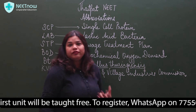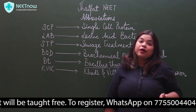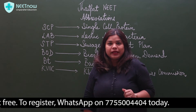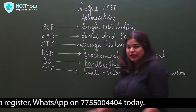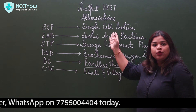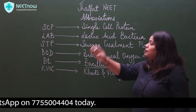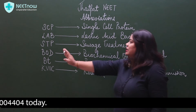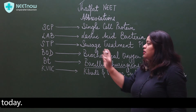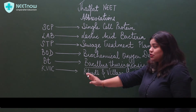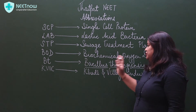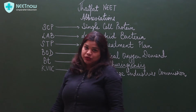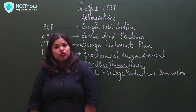So, today we have seen some abbreviations. I hope they will be very helpful. We have seen them in the revision book. One of them is SCP — Single Cell Protein. Spirulina and Perrinol are great examples. LAB — Lactic Acid Bacteria. STP — Sewage Treatment Plant. BOD — Biochemical Oxygen Demand. Bt — Bacillus thuringiensis. And KVIC — Khadi and Village Industries Commission. I hope you are following.